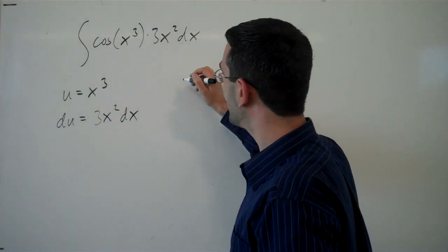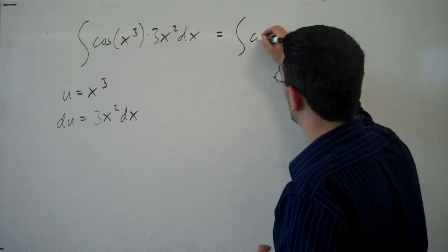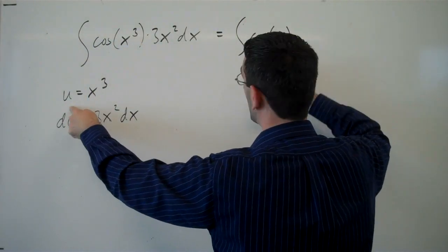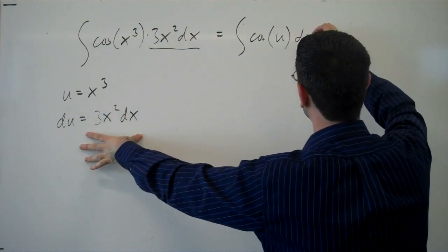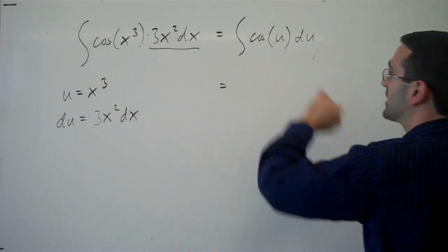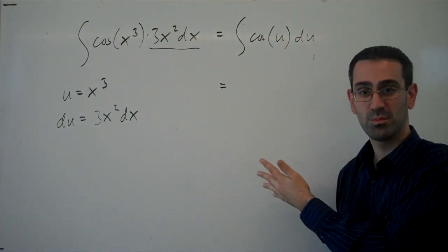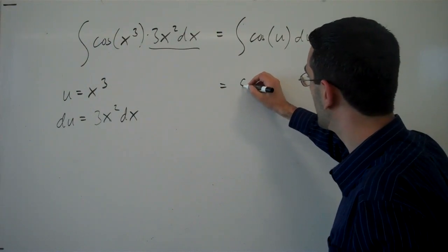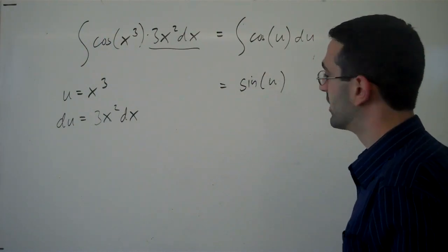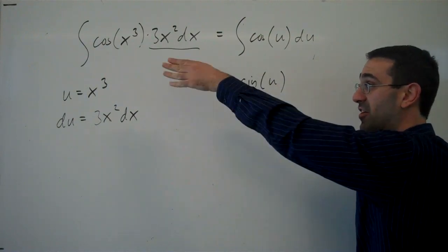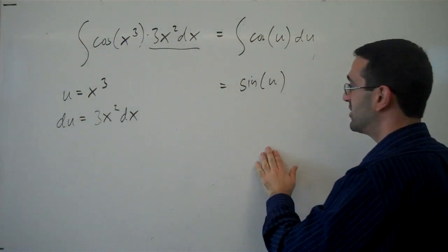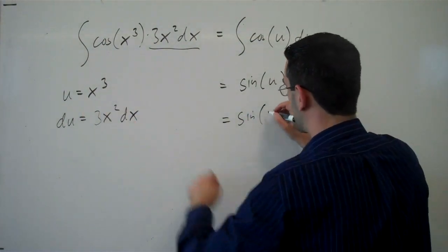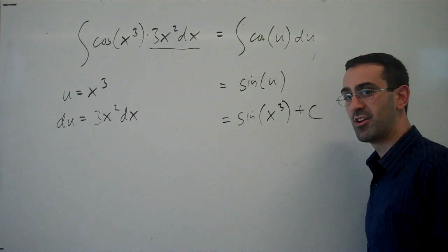Looking back at my integral here, we can replace the x³ with u, the 3x² dx is du, and now we're just integrating cos(u) du. That's a nice simple integral that we know how to do. The integral of cosine is just sine. Now we started with x's so we want to end with x's, so now we can undo our substitution replacing our u back with x³, and we have our integral.